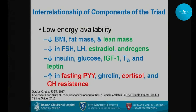Everything affected by low energy availability — the things in green are particularly positive predictors of bone mass and the things in red are negative predictors of bone mass. You can see all of these things are changed in the wrong direction with low energy availability.